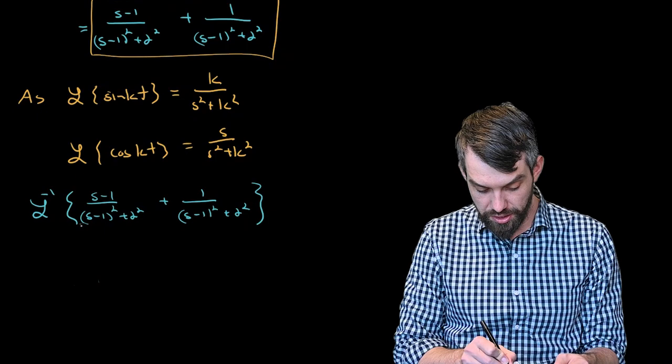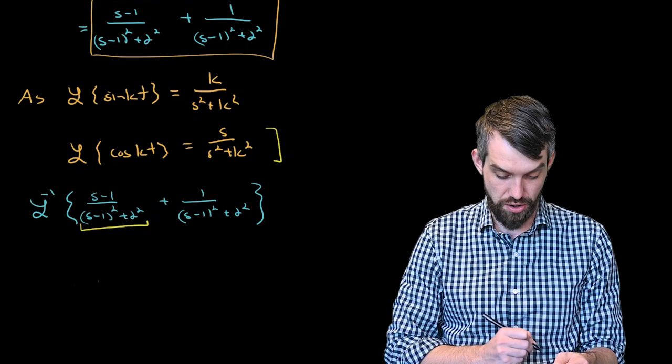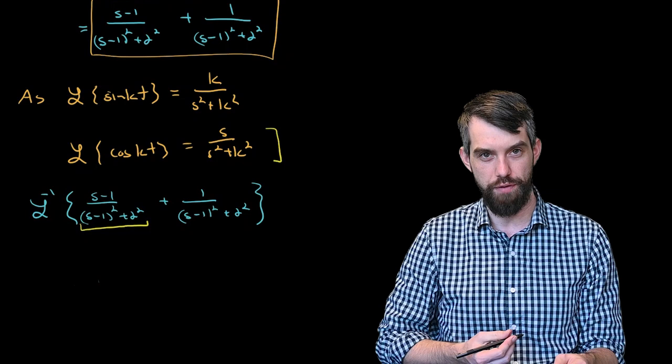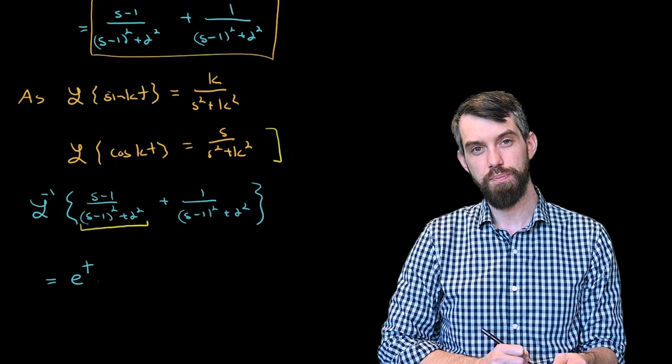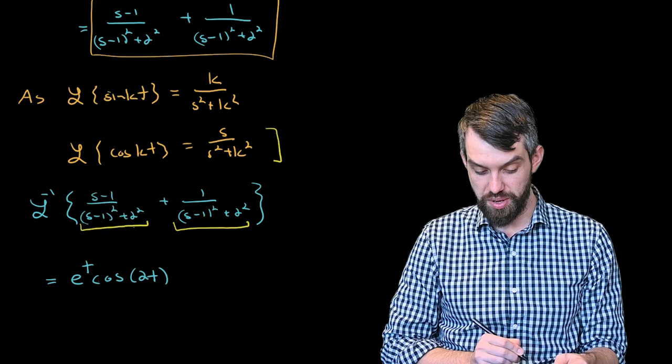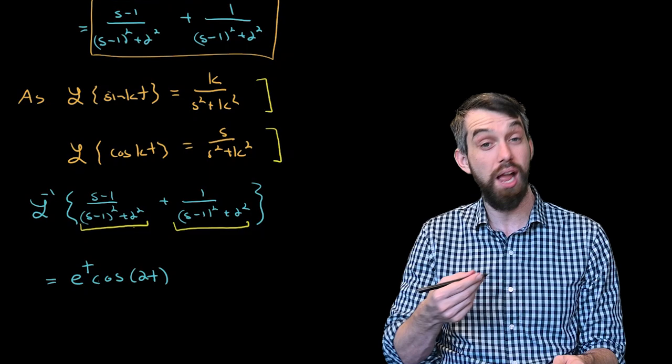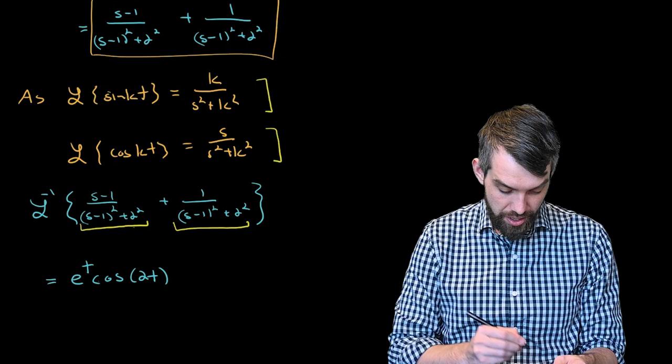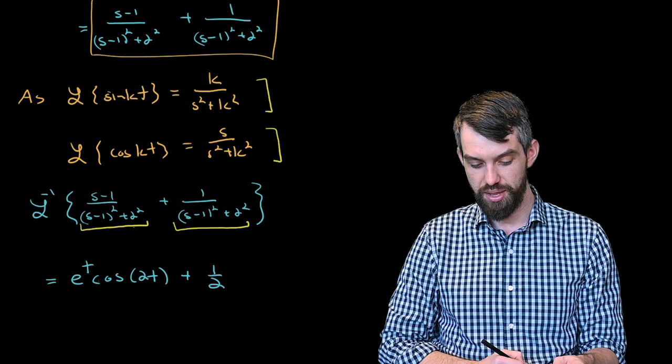Taking the inverse Laplace transform: the first term (s-1)/((s-1)² + 4) looks like the cosine expression but shifted — instead of s, there's s-1 everywhere. The shift means I multiply by e^t, giving e^t · cos(2t). For the second term, 1/((s-1)² + 4) looks like the sine term but with 1 on top instead of 2. So I write it as (1/2) times 2/((s-1)² + 4), giving (1/2)e^t · sin(2t). The final answer is e^t · cos(2t) + (1/2)e^t · sin(2t).